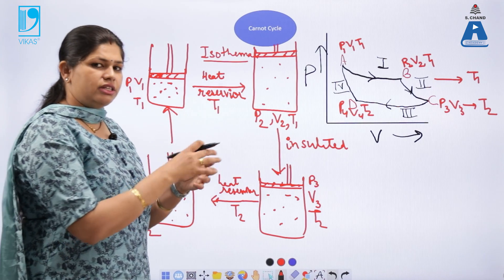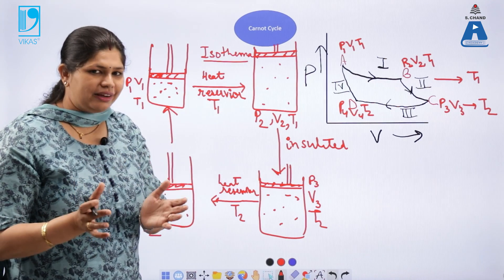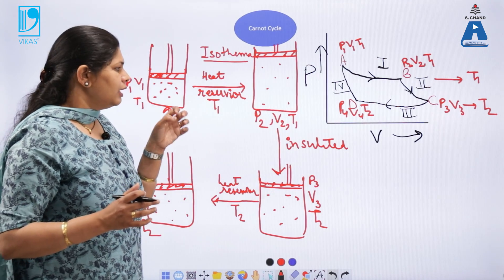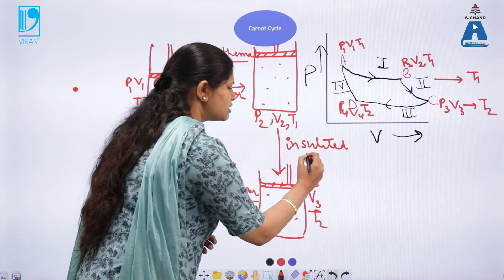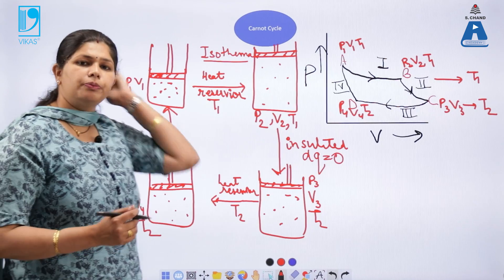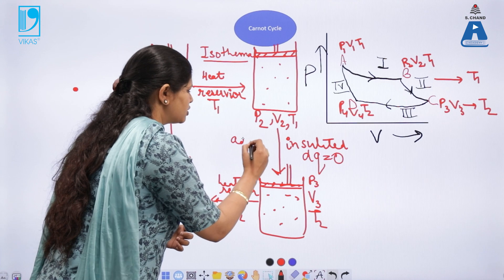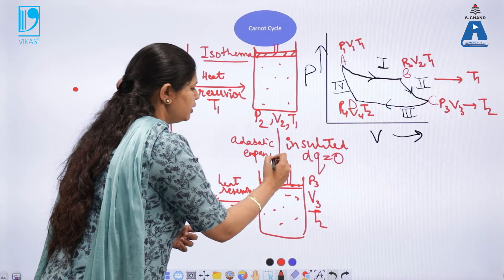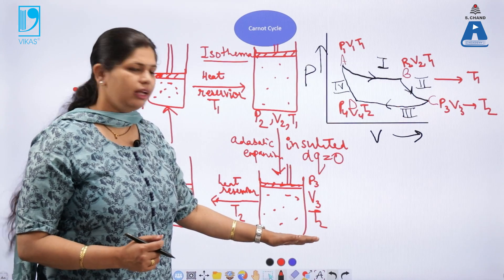After that, we take the engine out of the heat reservoir and insulate it. Once we insulate the system and allow it to expand again, there is no heat exchange allowed — this is called adiabatic expansion. During this process, the system attains pressure P3, volume V3, and temperature T2.